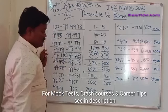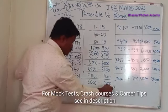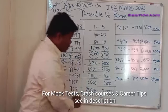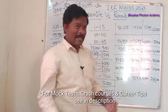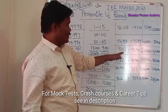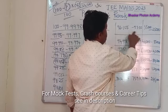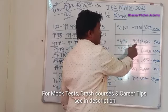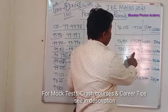For percentile 98.25 to 98.55, ranks are around 12,000 to 15,000. For percentile 97.1 to 97.81, ranks are around 20,000 to 25,000. For percentile 96 to 97, ranks are around 25,000 to 35,000. For percentile 95 to 96, ranks are approximately 35,000 to 40,000.